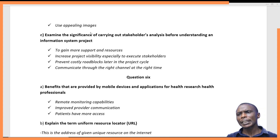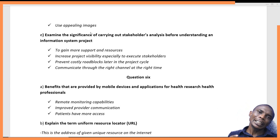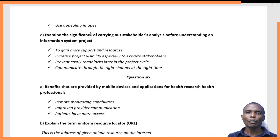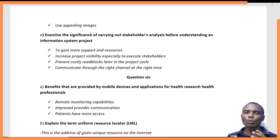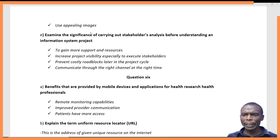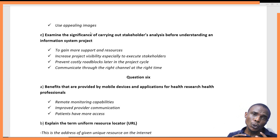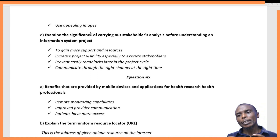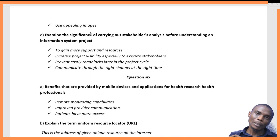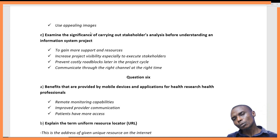Another reason is to prevent costly roadblocks later in the project life cycle. If you do not involve each and every stakeholder, they might decline at some point and you have to go back and gather information again. You must involve all stakeholders by engaging them. Lastly, it helps you communicate through the right channels at the right time — knowing who the sponsor is and who the user is, so that relevant information is passed to each specific line of communication.